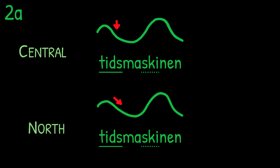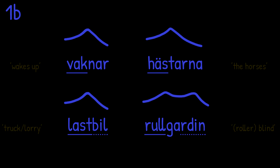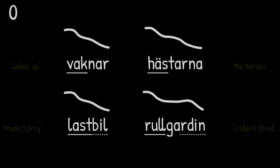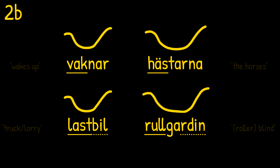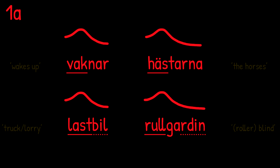'Tidsmaskinen'. In type 1b, there's also a difference in compounds. If there's an unstressed syllable between the syllables carrying stress, the pitch will remain high between them, as you can see in the word 'rullgardin'. As for the other types, they don't really care about compounds. Type 0 keeps a steady falling pitch, as in 'rullgardin'. Type 2b always puts the second peak at the end, as in 'rullgardin'. And type 1a drops the pitch and keeps it low after the peak, as in 'rullgardin'.